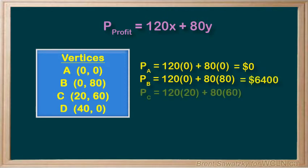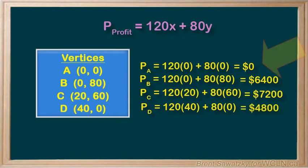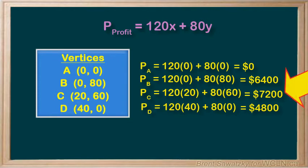The profit for the combination at point c — 20 gaming and 60 basics — plugging in those numbers gives $7,200. And finally, for point d, that is all gaming computers, we get a profit of $4,800. Recognizing our minimum profit is easy: zero for not doing any building. Our maximum profit is $7,200, and that's accomplished by making 20 gaming computers and 60 basics. A good thing for Anne to know when she plans her next month of building.